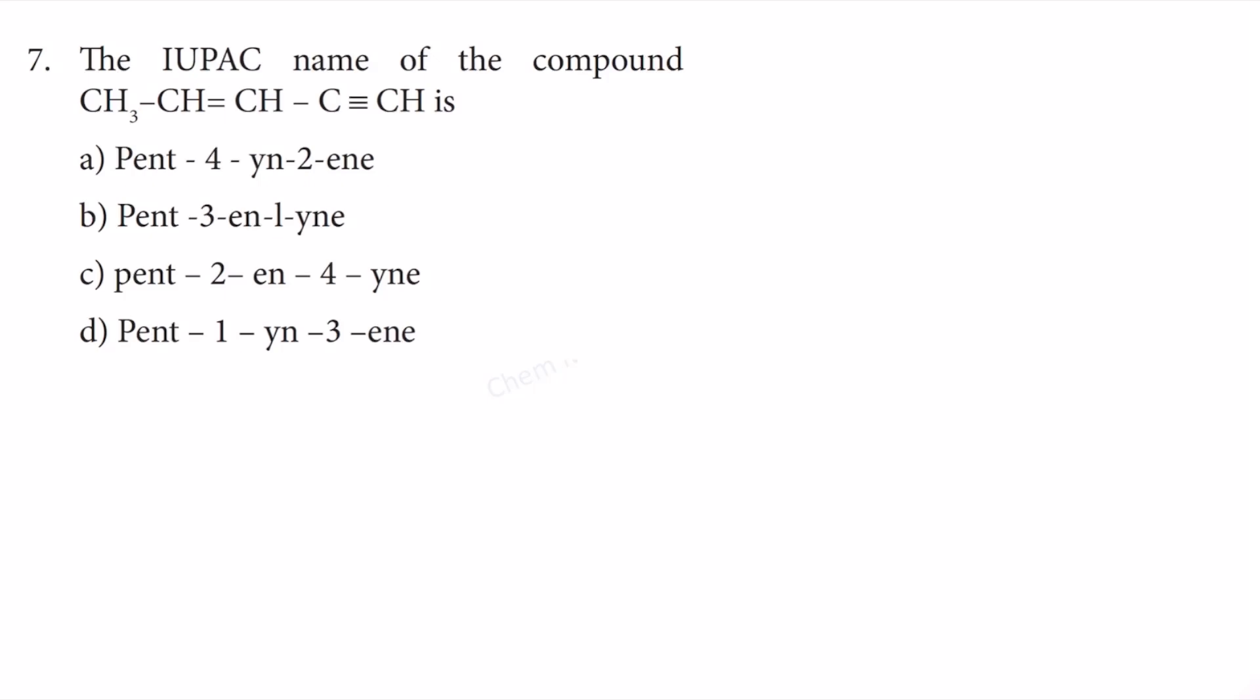Let's identify the IUPAC name for this structure. Let's do the numbering left to right: one, two, three, four, five. If we do the numbering left to right, then the double bond is at position 2, triple bond comes at position 4. On the contrary, if we do the numbering from right to left, then the double bond is at position 3, triple bond is at position 1.